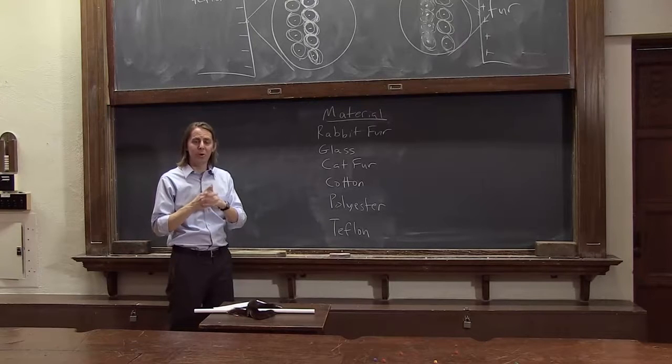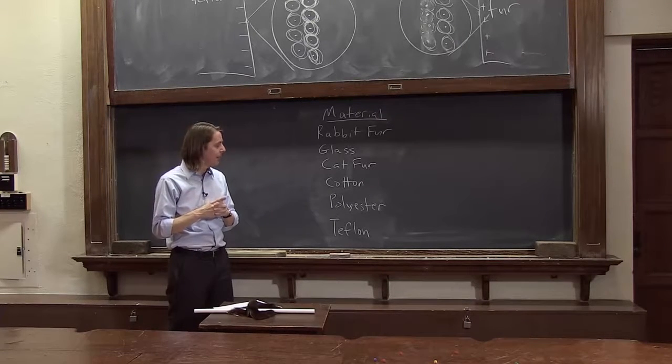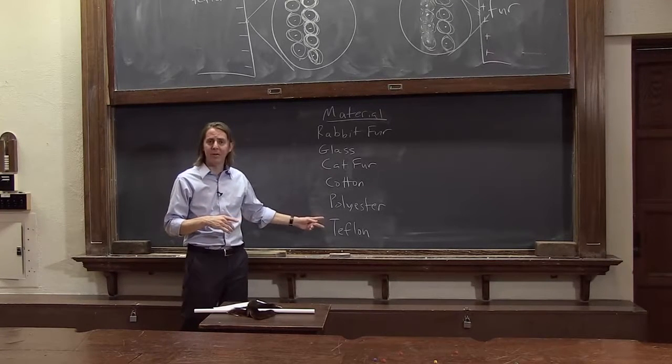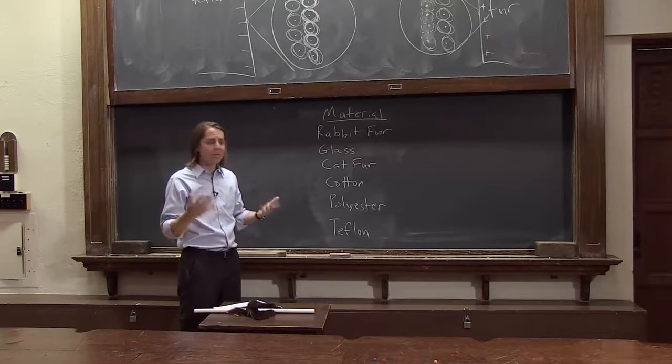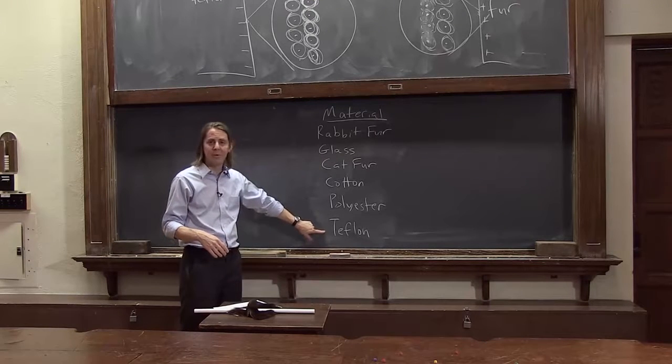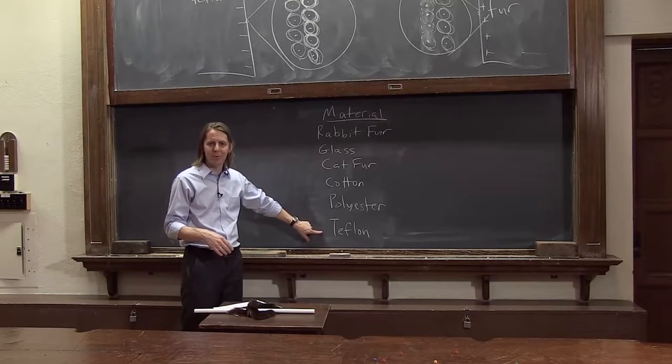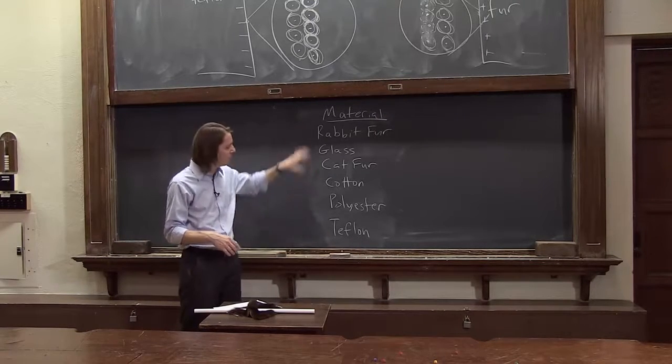It turns out Teflon has a lot of fluorine on it. Teflon is basically plastic where all the hydrogens have been replaced with fluorine atoms. So chemically it actually makes sense that Teflon's way at the bottom. It loves to grab electrons. Always ends up negative. That's why I use it in the demo.